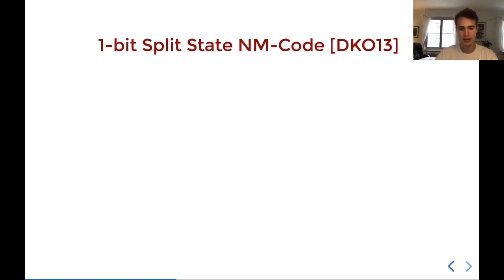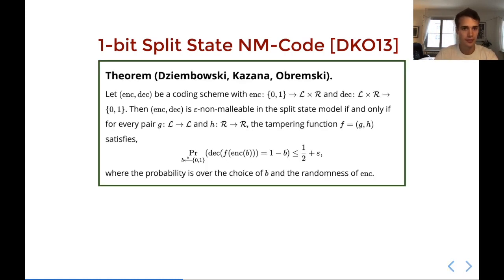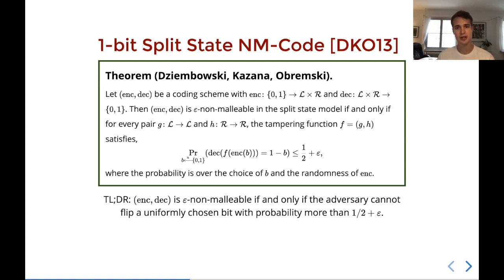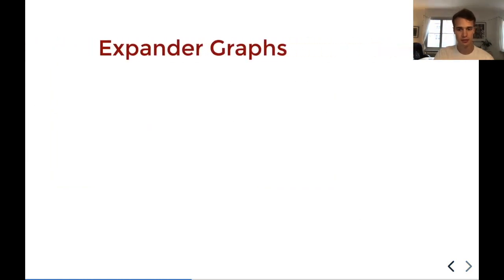The first construction of this was where the message was only one bit. And furthermore, where no encoded message could decode to a bot, so all encodings made sense in that sense. There's this very nice characterization of this that was introduced by Dziembowski, Kazana, and Obremski in 2013 when they constructed this first split-state non-malleable code. Essentially, the characterization is that this coding scheme is epsilon non-malleable if and only if the adversary cannot flip a uniformly chosen bit with probability more than one half plus epsilon. Of course, it's always possible to flip the bit zero because you can just put the constant function one or the other way around. But if you choose the bit at random and then you're asked to flip it without knowing what it is, then you shouldn't be able to succeed with probability more than one half plus epsilon.